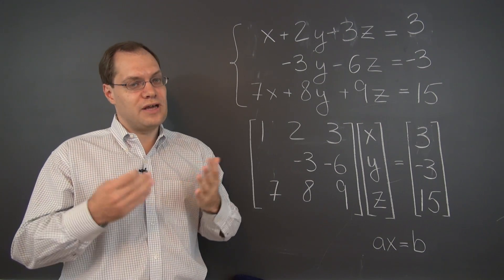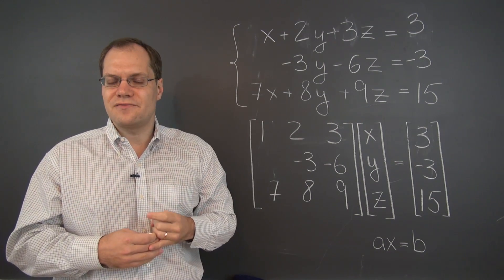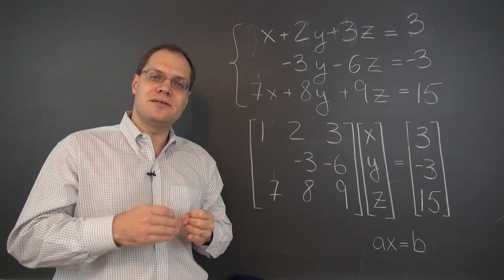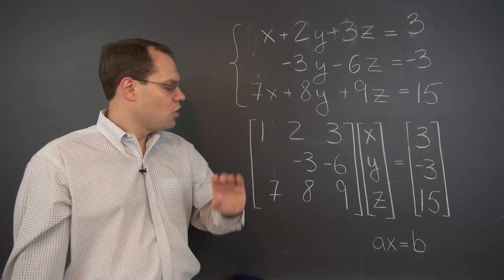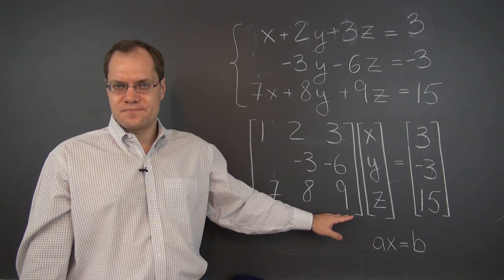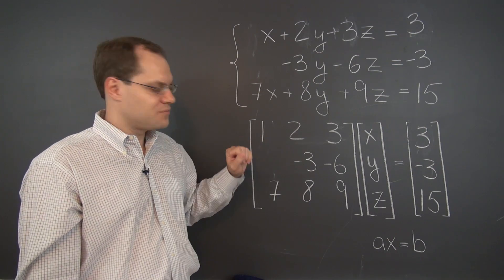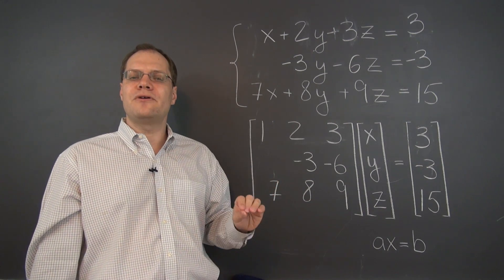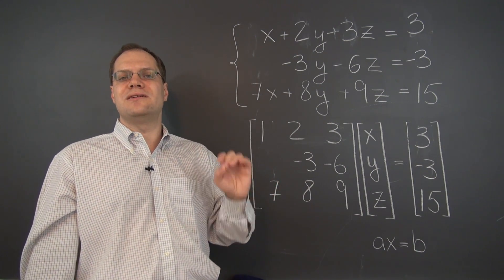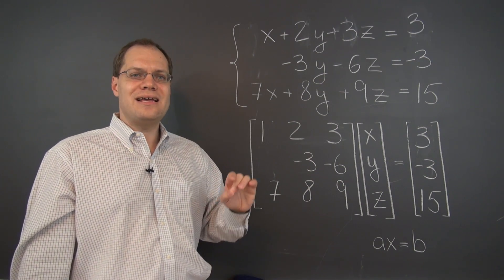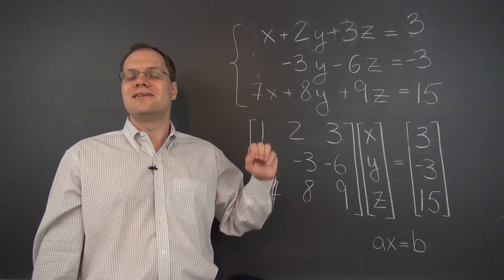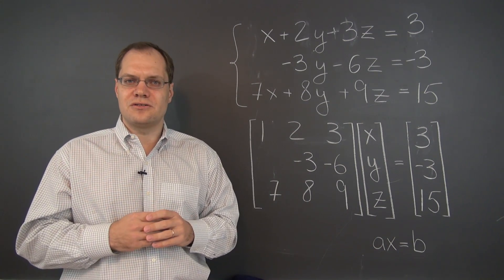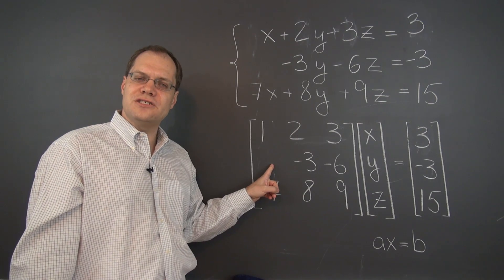So that's actually what we'll do more often than any other operation. And that is not multiply an equation by a number and then add or subtract it from another equation, but leave that equation unchanged and simply add or subtract a multiple of that equation from another equation. Or in the matrix language, we would add or subtract a multiple of one row from another.